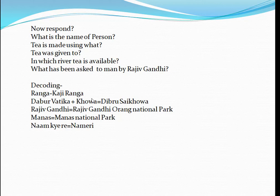By using those codes, we can learn a lot of things. As I told you in the first class, we learn the national parks as well as wildlife sanctuaries state-wise. So tea is linked with Assam. Rajiv Gandhi — we used it straight away — that gives Orang National Park in Assam. And Manas gives Manas National Park, since the entire Manas river is filled with tea. And Rajiv Gandhi asked 'Naam Kyare,' which gives Nameri National Park. So these are the five national parks, learned within two to three minutes, and you'll remember them permanently.